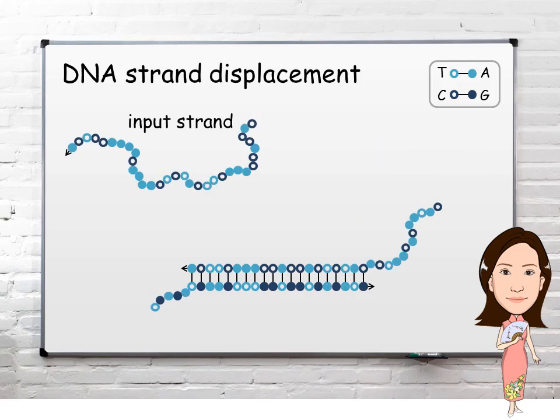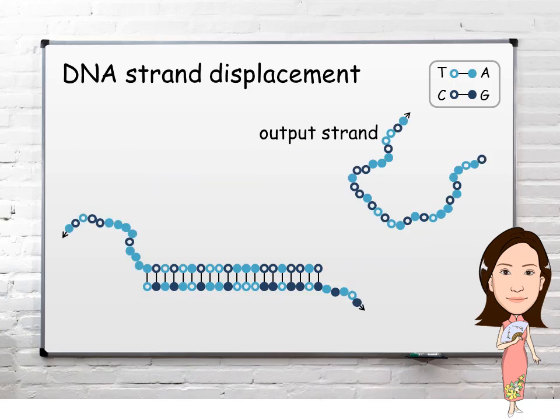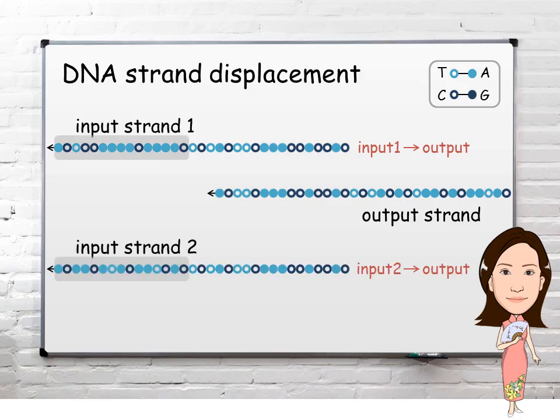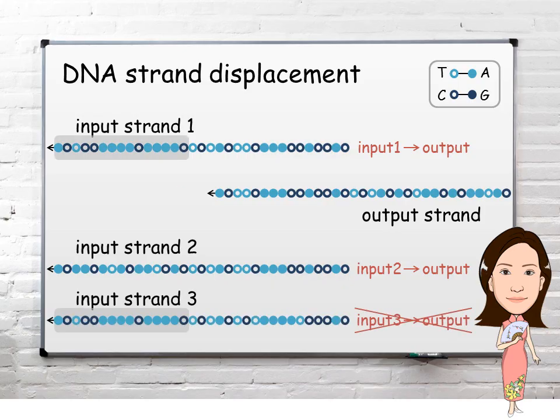The strand displacement process can be seen as an input strand releasing an output strand. This works because they share the same sequence within the right part of the input strand and the left part of the output strand. Naturally, this input strand is not the only molecule that can produce the output strand. An input strand with a different sequence on the left and the same sequence on the right can also trigger the release of the output strand. But an input strand with the same sequence on the left and a different sequence on the right would not produce the output.